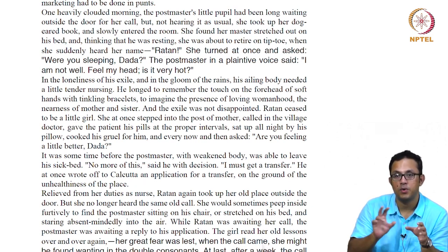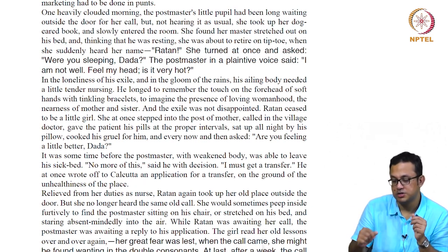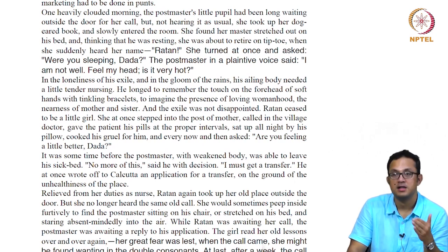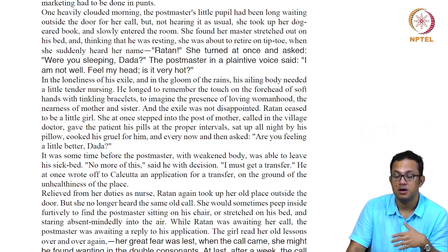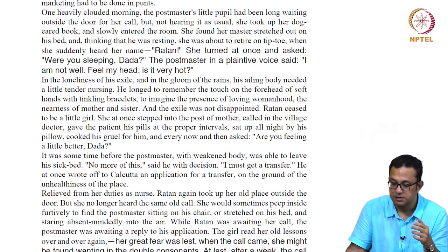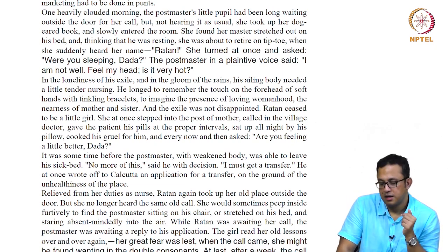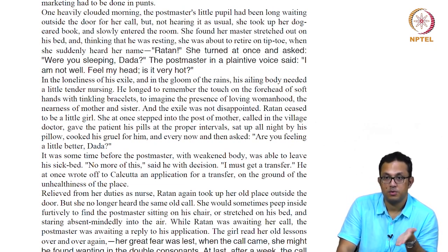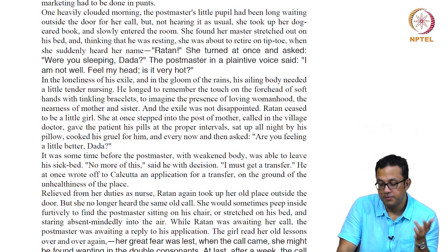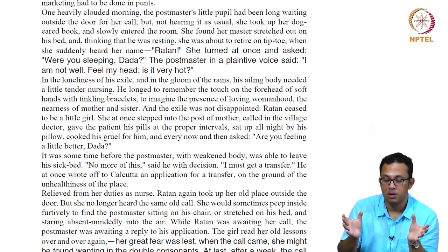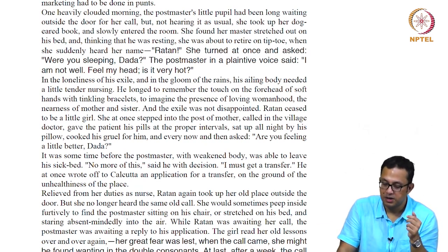Ratan would sometimes peep inside furtively to find the postmaster sitting on his chair or stretched on his bed, staring absentmindedly into the air. When Ratan was awaiting her call, the postmaster was awaiting a reply to his application. Look at the two kinds of wait described here: Ratan is waiting for the call so she can start learning again, resume the companionship with the postmaster — but that process is interrupted permanently. The postmaster does not call her anymore. Instead, he is waiting for a letter from the headquarters, hoping the transfer will be granted. We have two different kinds of wait in operation here: one a more human wait, the other a more official, bureaucratic wait.